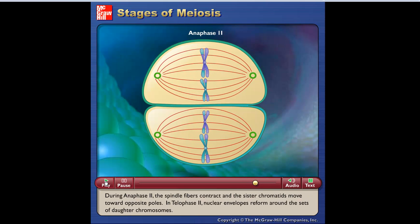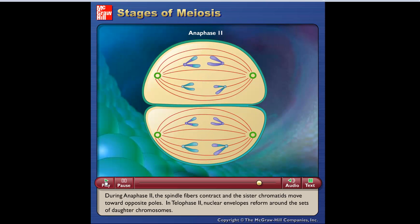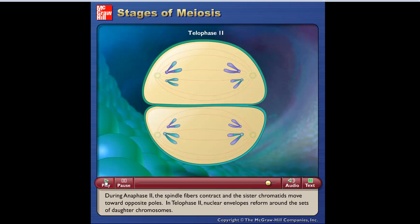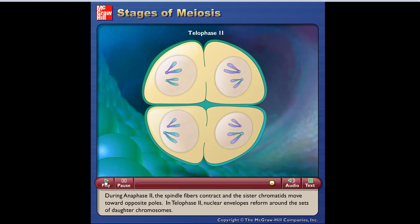During anaphase II, the spindle fibers contract and the sister chromatids move toward opposite poles. In telophase II, nuclear envelopes reform around the sets of daughter chromosomes.